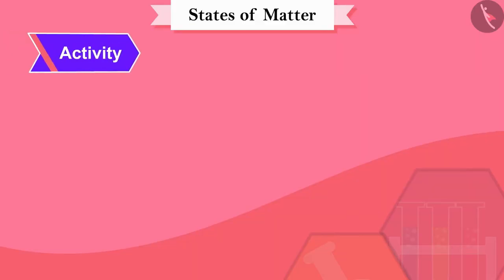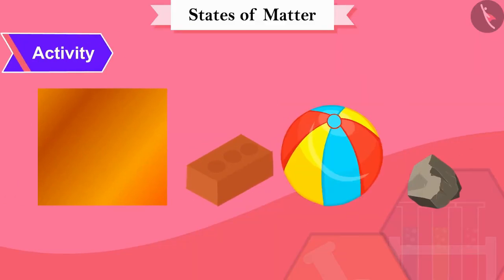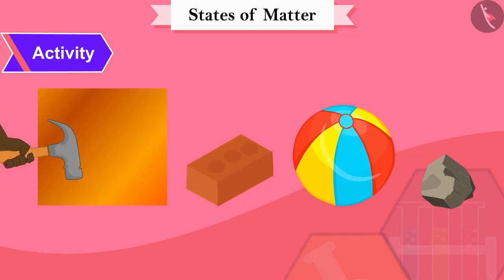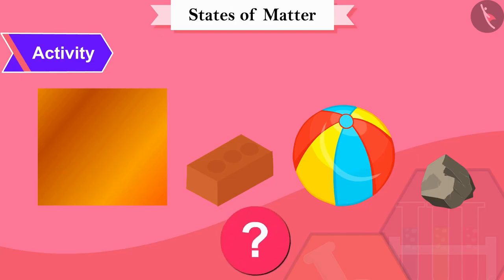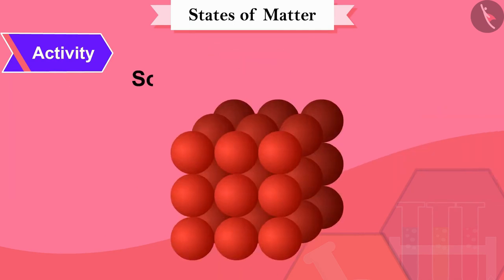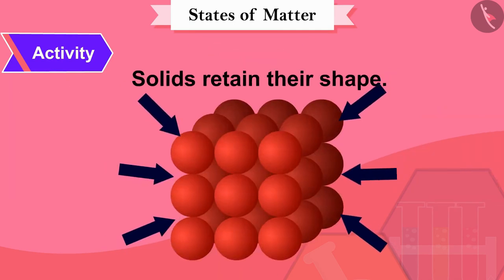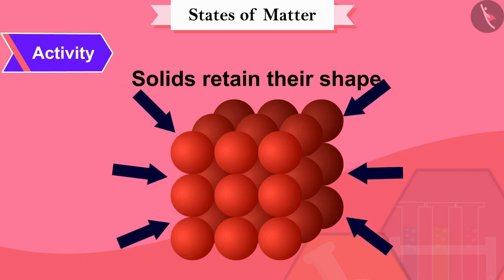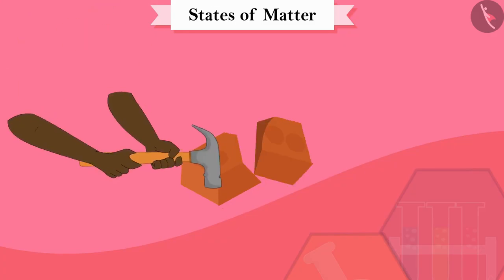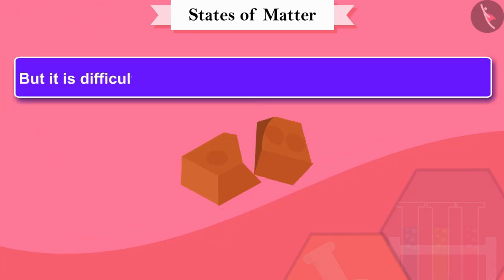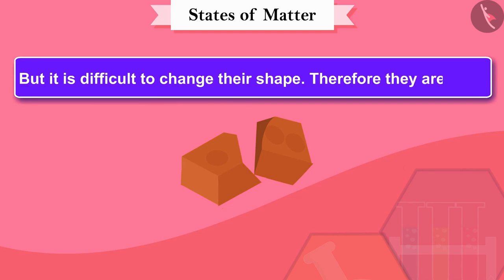Now let's do a fun activity. Try hitting these objects with a hammer, dragging or dropping them. What do you see? Have their shapes changed? No. Solids retain their shape even when force is exerted externally. Concrete can break when pressure is applied, but it is difficult to change their shape. Therefore, they are rigid.